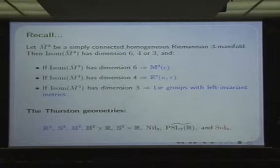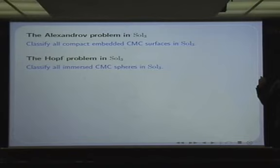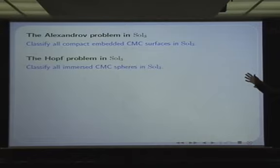As I have previously talked about existence and uniqueness of constant mean curvature spheres in the first lecture, it is natural here to expose two problems. One is the Alexandrov problem: classifying all compact embedded CMC surfaces in Sol₃. The other is the Hopf problem: classifying all immersed CMC spheres — topological spheres — in Sol₃. So how can we do this?